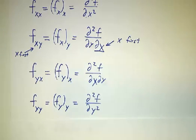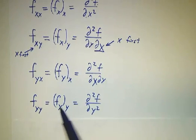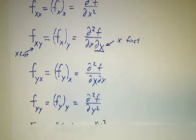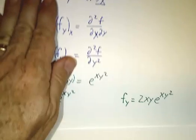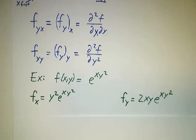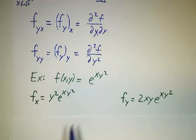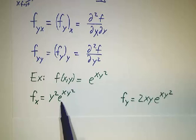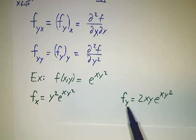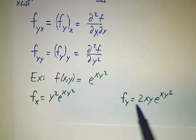And f_yx means you take a partial with respect to y and then take a partial of that with respect to x. We could also compute f_yy, which is a partial with respect to y and then take the partial derivative of that with respect to y. So let's work an example: our favorite function from the previous video, e to the xy squared. The derivative with respect to x was y squared e to the xy squared, and the derivative with respect to y was 2xy e to the xy squared.